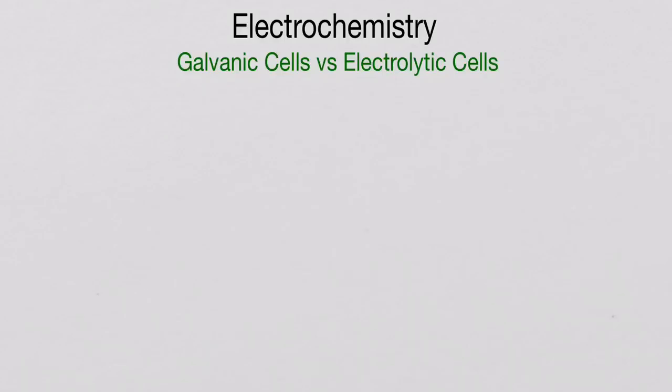Hi guys, if you joined us for online lesson this week, we've been covering electrochemistry. We went into some detail with the galvanic cells, looked at some redox reactions, and covered definitions — what is a redox reaction, what is electrochemistry, what is oxidation, what is reduction, and what are the two agents. If you'd like to go through that stuff again, there is a video on the YouTube channel you can visit to recap.